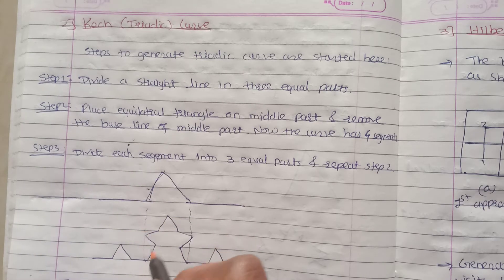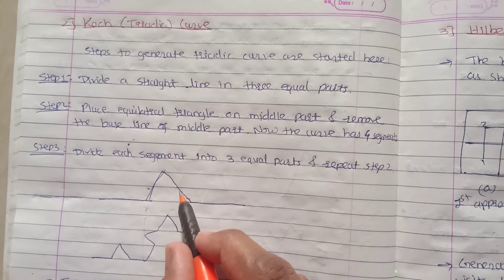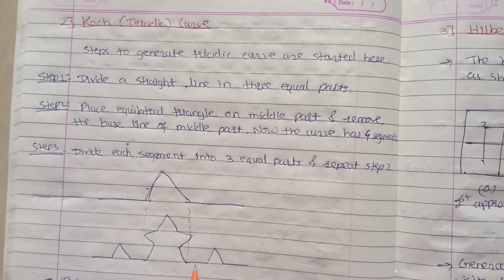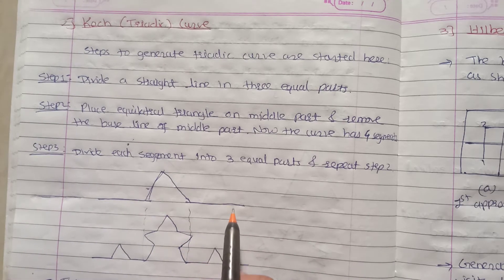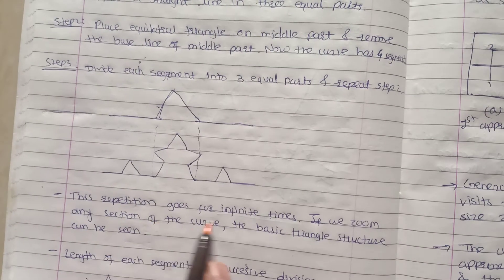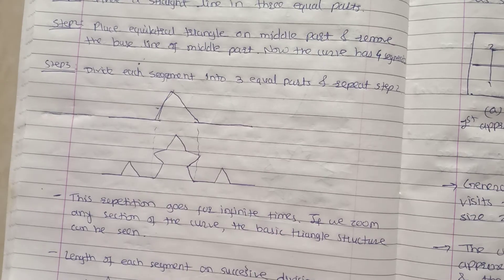Equilateral triangle and this part remove. Repeat for each segment: equilateral triangle with two sides and remove the middle part. This repetition goes for infinite times.